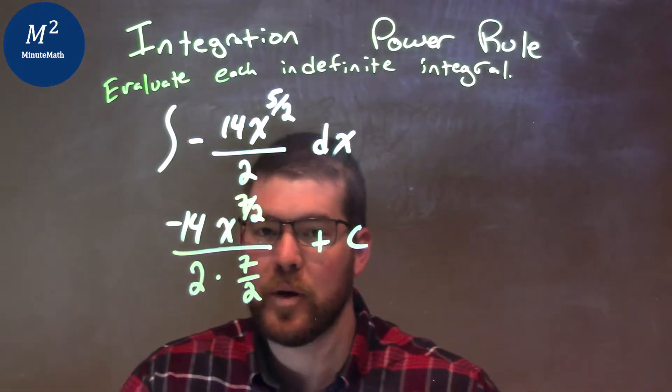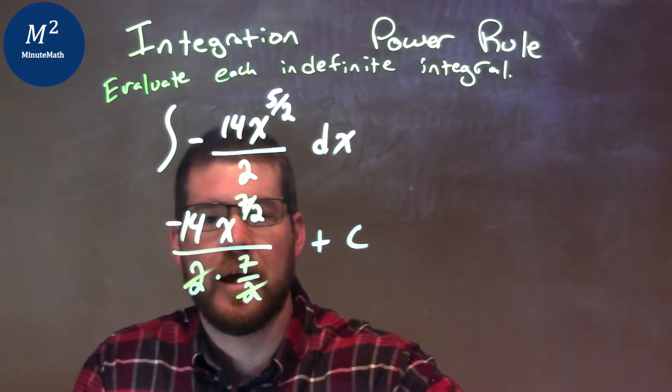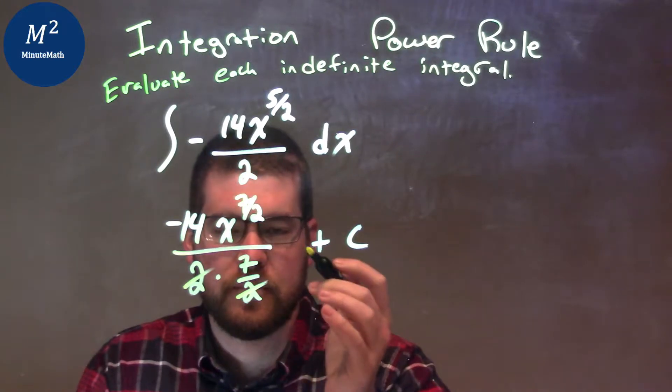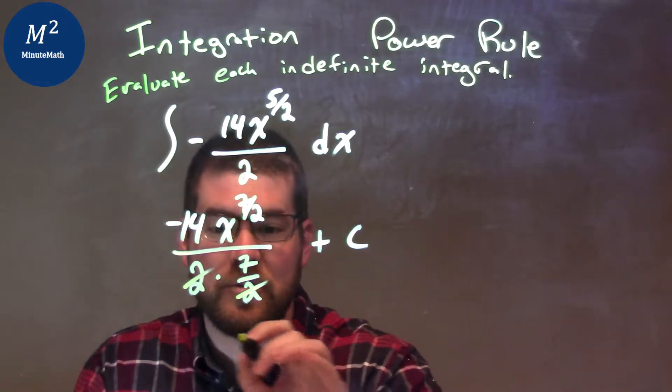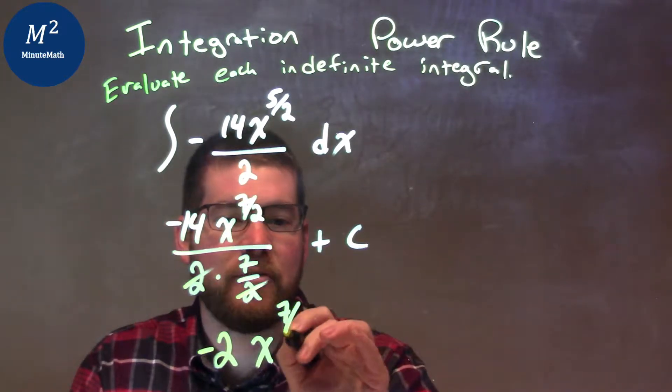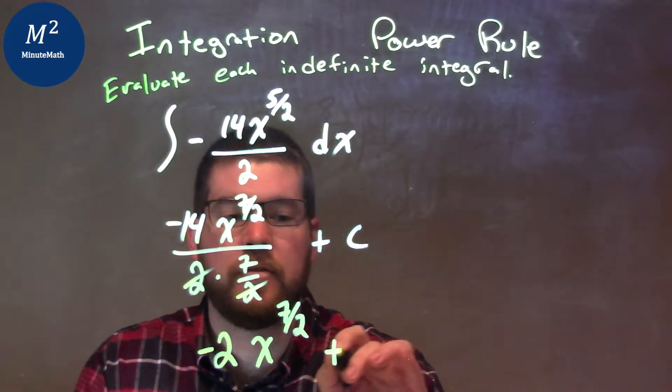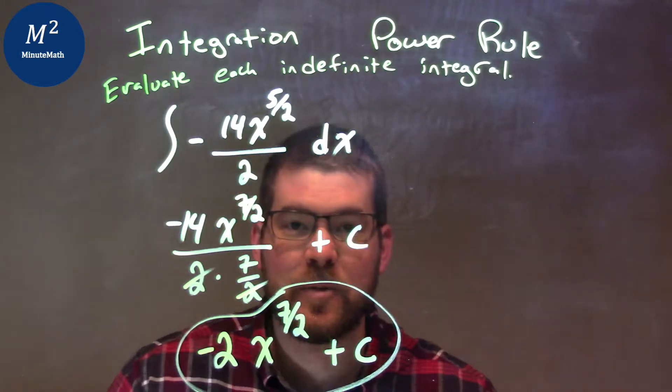So this is actually pretty quick to simplify. 2 and 2 cancel out. 2 divided by 2 is 1. And then 7 and a negative 14 is a negative 2. So we'll get negative 2x to the 7 halves power plus c. That's it. That is our final answer.